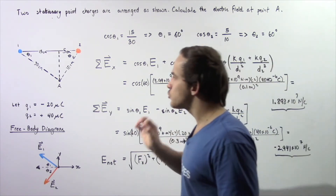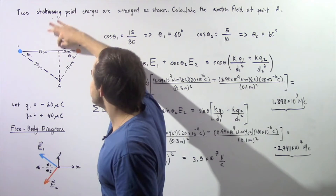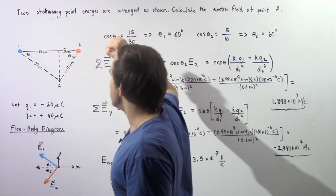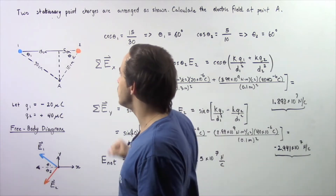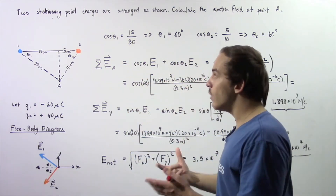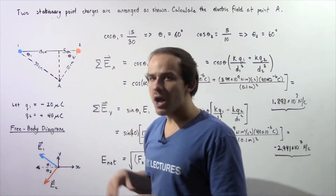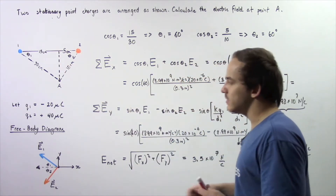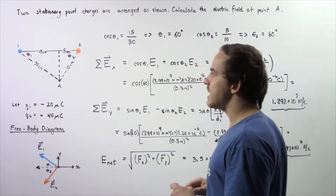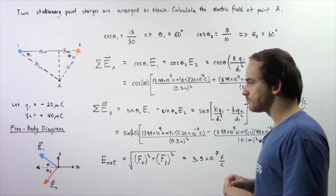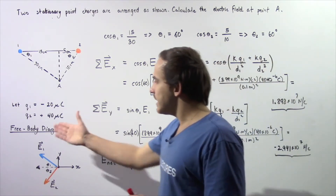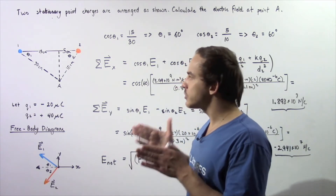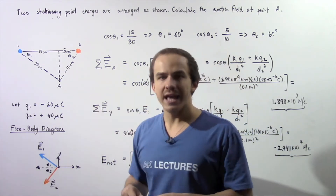If we draw a line that bisects, we'll see that one section becomes 15 centimeters and the other becomes 5 centimeters, giving us two right triangles. We're going to use these right triangles to calculate the angle. Let's begin by looking at the free body diagram for all the electric fields acting at point A.